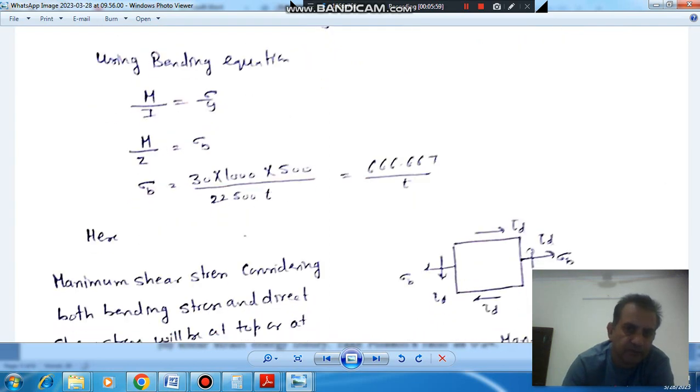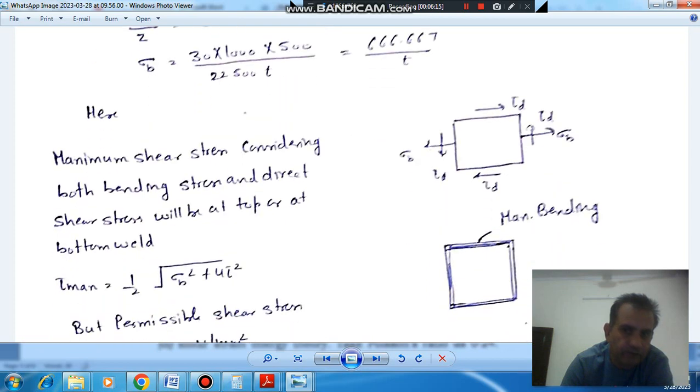So, according to bending equation, from bending equation, we have M as 30,000 into 500 and Z we have calculated. So, sigma becomes 6666.667 by T.